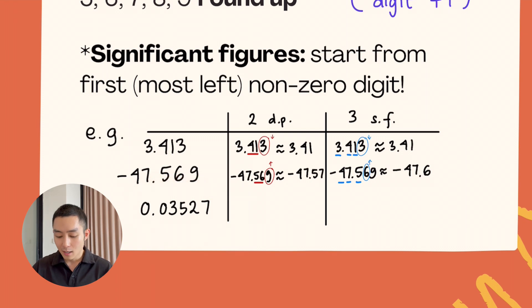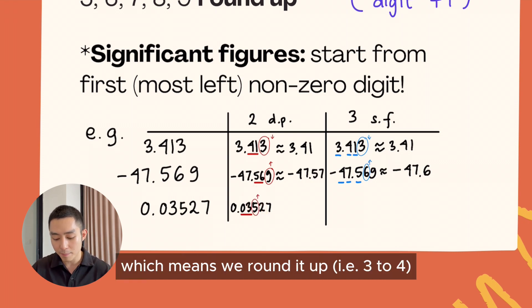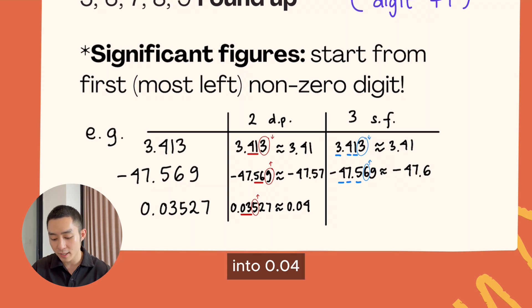And so for the last one, we need to take a look. It's 2dp, so it will be 0 and 3. The next digit is 5, which means we round it up into 0.04.